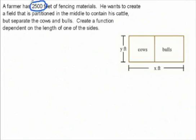this 2,500 feet of fencing—that's going to be the amount of this brown line, including this middle piece here. That's kind of like a perimeter. So I'm going to start off with my 2,500 feet of fencing, and it's going to have to equal the dimensions of this fence here.